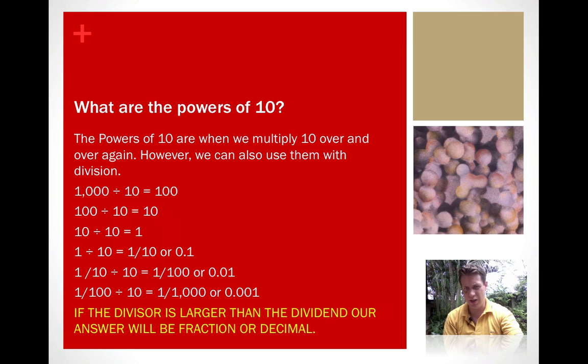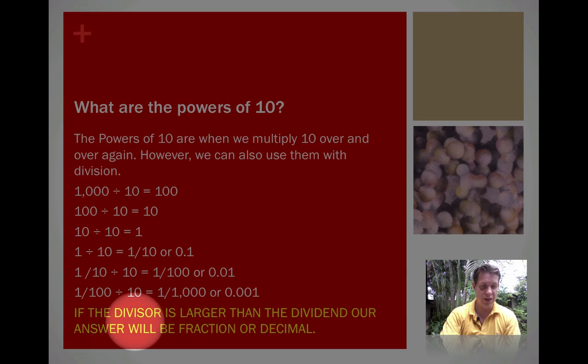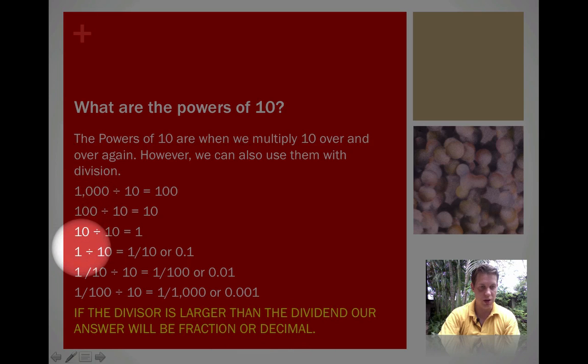The other important thing to notice here that's very different from the multiplication video: if the divisor, which remember the divisor is the number we're dividing by, which in this case is going to be 10 every time, if that number is larger than the dividend, which are these over here, the number being divided, our answer will be a fraction or decimal. So if we had 1 is the dividend and 10 is the divisor, well, this divisor is larger than the dividend, so our answer was a fraction or a decimal. We haven't really learned about decimals yet, but I decided I would just put it in. So 1/10 is a fraction, 0.1 is a decimal.